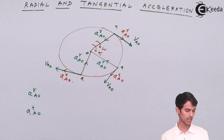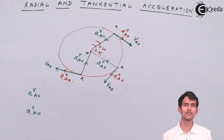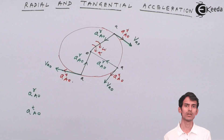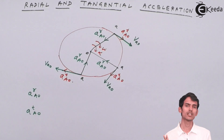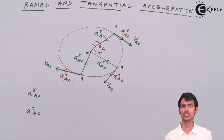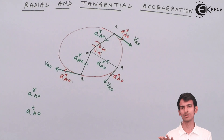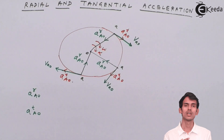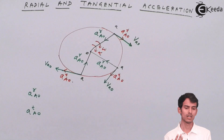Radial acceleration is denoted A^R_AO and tangential as A^T_AO. When you switch on a fan from rest, the speed increases from zero to some value — magnitude changes — so both radial and tangential accelerations are present. Once the fan reaches a steady speed, the magnitude no longer changes, so tangential acceleration becomes zero. When the fan slows down to a stop, the magnitude changes again, bringing tangential acceleration back into the picture.